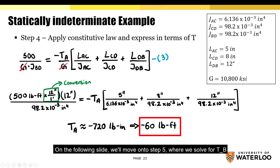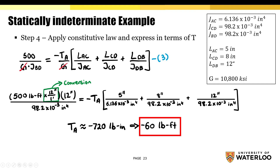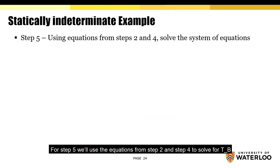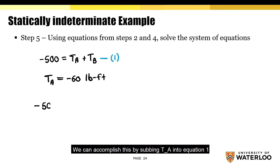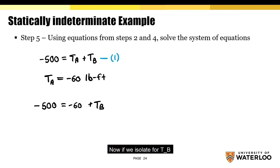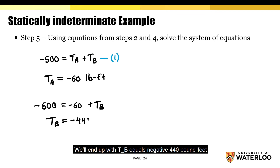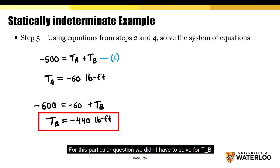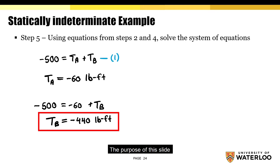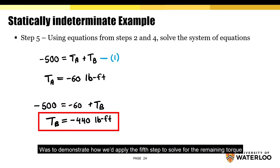For step 5, we'll use the equations from steps 2 and 4 to solve for T-B by substituting T-A into equation 1. Isolating T-B gives T-B equals negative 440 pound-feet. Note that for this particular question, we didn't strictly need to solve for T-B, since each segment's torque was expressed in terms of T-A. This step demonstrates how we'd apply the fifth step to solve for the remaining torque.